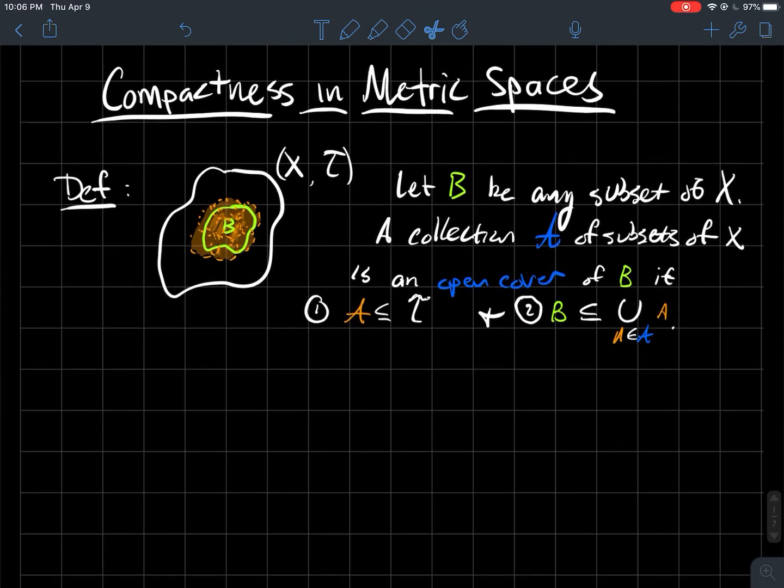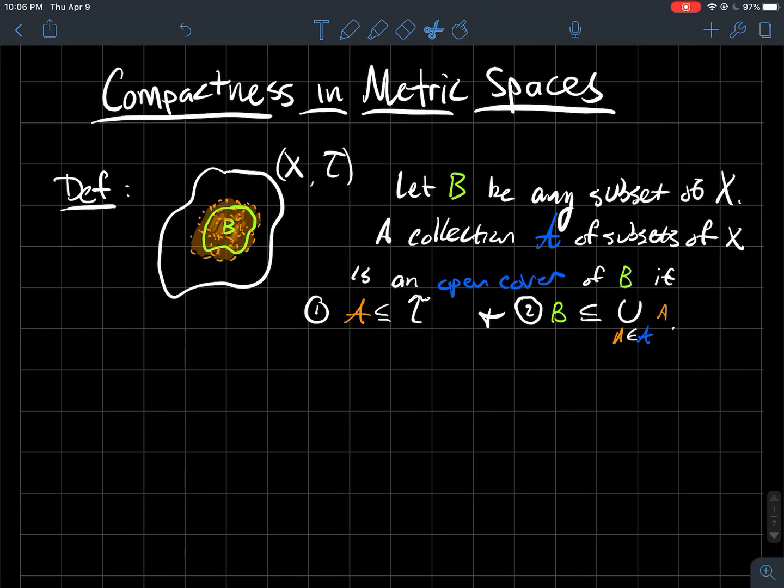I'll tell you what a compact subset of a metric space is first. If B is any subset of your space X, then a collection, fancy A, of subsets of X is called an open cover of that subset B if two things happen.